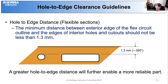Hole to edge distance in a flexible circuit should be maintained to a maximum of 1.3 mm or 50 mils, accounting for the distance between the exterior edge of the flex circuit outline and the outer edges of interior holes and cutouts. When larger distances can be maintained, it will contribute to assuring a more reliable product.